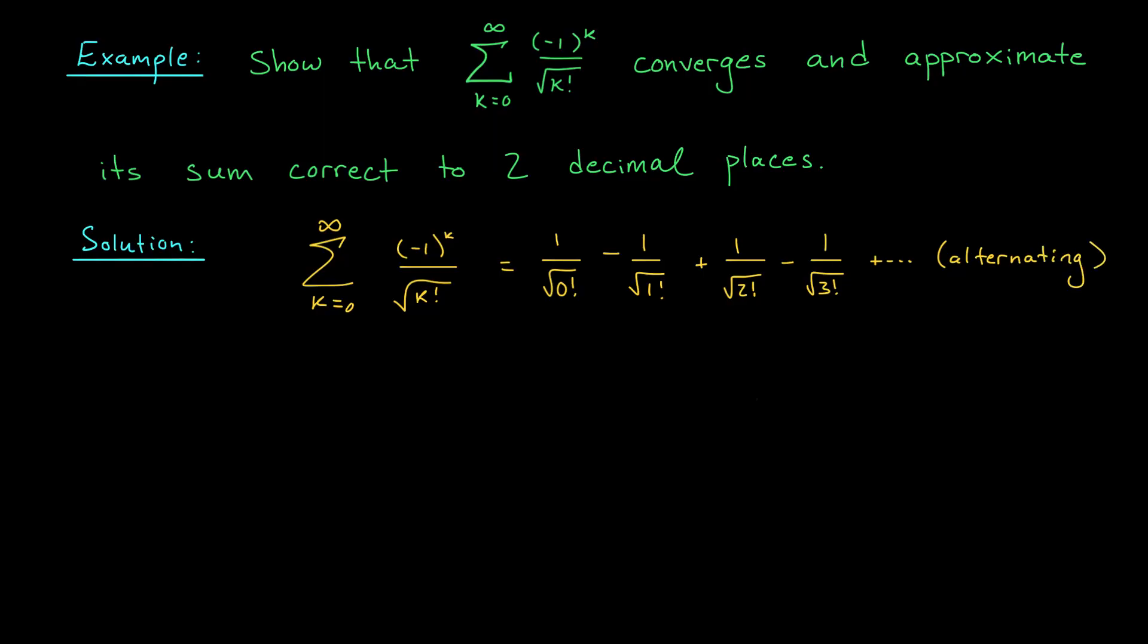The absolute values of our terms are given by bk equals 1 over the square root of k factorial, and we need to make sure that these bk's are decreasing and tend to 0. Sure enough, they are. Of course, when k gets bigger, the square root of k factorial is going to get bigger as well, and so 1 over this term is getting smaller. So these terms are decreasing, and as k goes off to infinity, our denominator blows up to infinity as well, so these terms are going to 0. According to the alternating series test, this series is convergent.